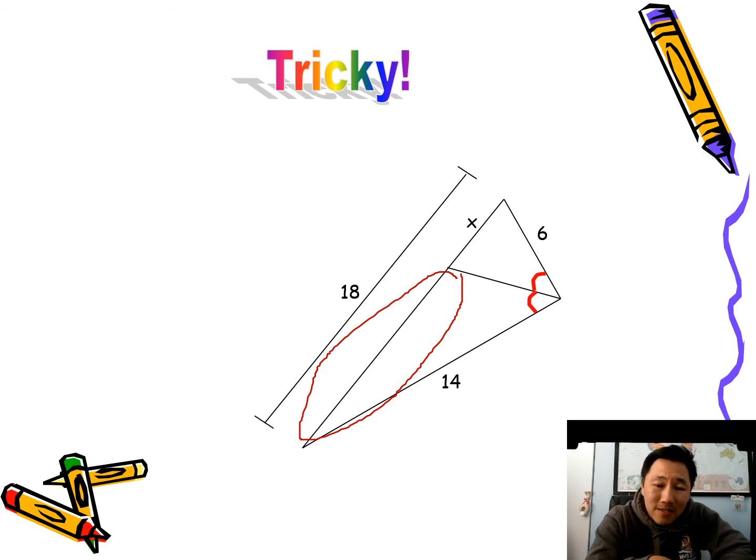But this one takes a little bit more work. So the whole side is 18, and then this is X. What's left over? Let's think about that for a second. That's 18 minus X.